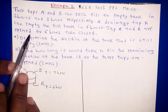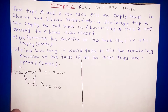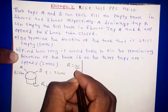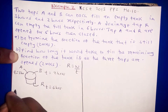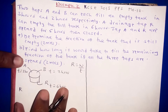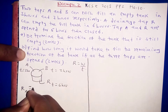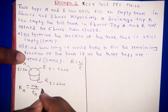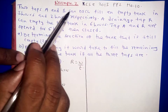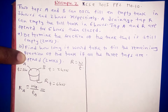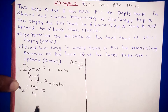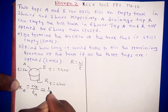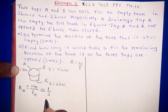We are told that tap A and R are open for five hours. First, let's find the rate for each tap. Remember from a previous class, rate is given by work done divided by time. The rate for tap A running alone will be the work done by tap A divided by the time taken. Tap A fills an empty tank, so the total work done is one, divided by three hours.